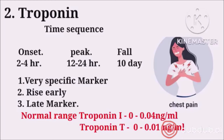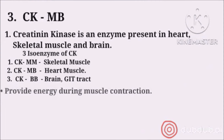You would not do myoglobin at this time because it remains in the blood for only one day. So if a patient had a heart attack three or four days ago, you will find the troponin level elevated in the blood. The normal range of troponin I is 0 to 0.04 nanograms per ml, and the normal range of troponin T is 0 to 0.01 nanograms per ml.